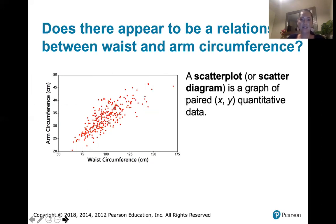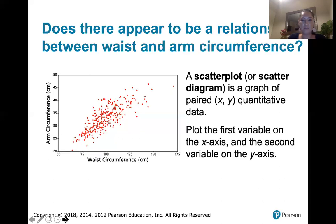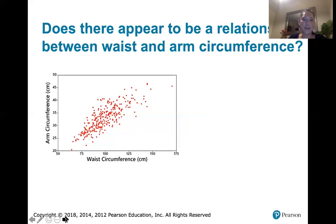A graph like this is called a scatter plot — sometimes it's called a scatter diagram. It's just a graph of paired quantitative data. We've got to have x values and y values that are represented by numbers; they're numerical, and those numbers are measures of something or counts of something. We tend to plot the first variable on the x-axis, or horizontal axis, and the second variable on the vertical axis, or y-axis.